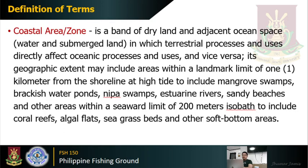Another term is coastal area or coastal zone. It is a band of dry land and adjacent ocean space — water and submerged land — in which terrestrial processes and uses directly affect oceanic processes and uses, and vice versa. Its geographic extent may include areas within a landward limit of one kilometer from the shoreline at high tide to include mangrove swamps, brackish water ponds, nipa swamps, estuarian rivers, sandy beaches, and other areas within the seaward limit of 20 meters isobath to include coral reefs, algal flats, seagrass, seabeds, and other soft bottom areas.